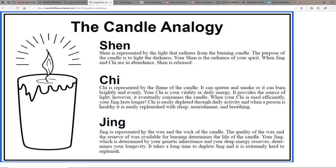Your chi is your vitality, your daily energy. It provides the source of light, however it eventually consumes the candle. When your chi is used efficiently your jing lasts longer. Chi is easily depleted through daily activity, and when a person is healthy is easily replenished with sleep, nourishment, and breathing.